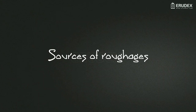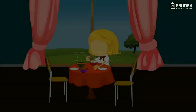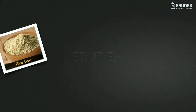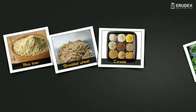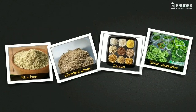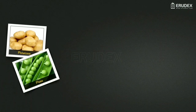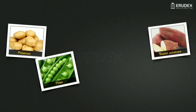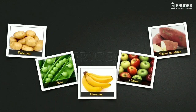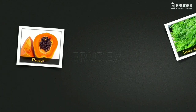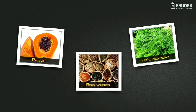Sources of roughages. As we know the importance of roughage in our diet, we must include sufficient amounts in our food. We obtain roughage from rice bran, pepper, shredded wheat, cereals, green vegetables, potatoes, peas, sweet potatoes, apples, bananas, papaya, leafy vegetables, bean varieties, and more.